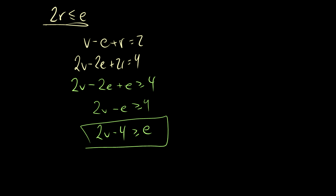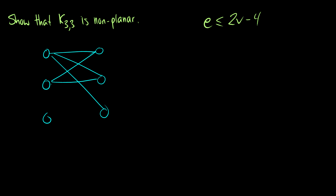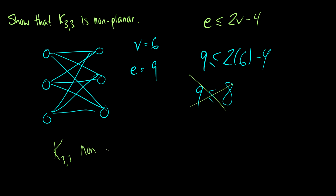Now we can show that K33 is non-planar. E has to be less than or equal to 2V minus 4. K33 has 6 vertices and 9 edges, since each of the three vertices on the left connects to three on the right: 3 plus 3 plus 3 equals 9. So 9 has to be less than or equal to 2 times 6 minus 4, which is 8. We know 9 ≤ 8 is not true. Therefore, K33 is non-planar.